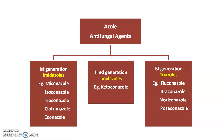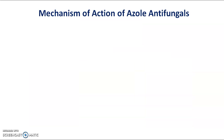Azole antifungal agents can be classified as 1st generation imidazoles, 2nd generation imidazoles, and 1st generation triazoles. The examples of 1st generation imidazoles include miconazole, isoconazole, tioconazole, clotrimazole, and econazole. The 2nd generation imidazoles include ketoconazole. And the triazoles include fluconazole, itraconazole, voriconazole, and posaconazole.